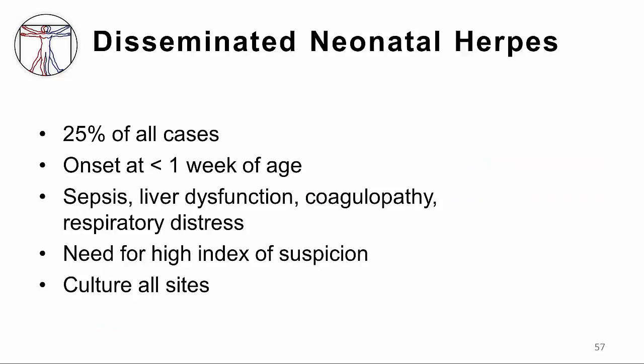The second form of infection, representing about 25% of cases, is disseminated infection. Babies typically present during the first week of life and, for all intents and purposes, look as if they have a bacterial septic infection. They present with sepsis, often have severe liver dysfunction, and because they cannot make coagulation factors, they have a severe coagulopathy and they hemorrhage. They may also have respiratory distress because of involvement of the lungs. If there are no vesicles present, it may be difficult to think of herpes — you must have a high index of suspicion and keep herpes in mind in addition to bacteria.